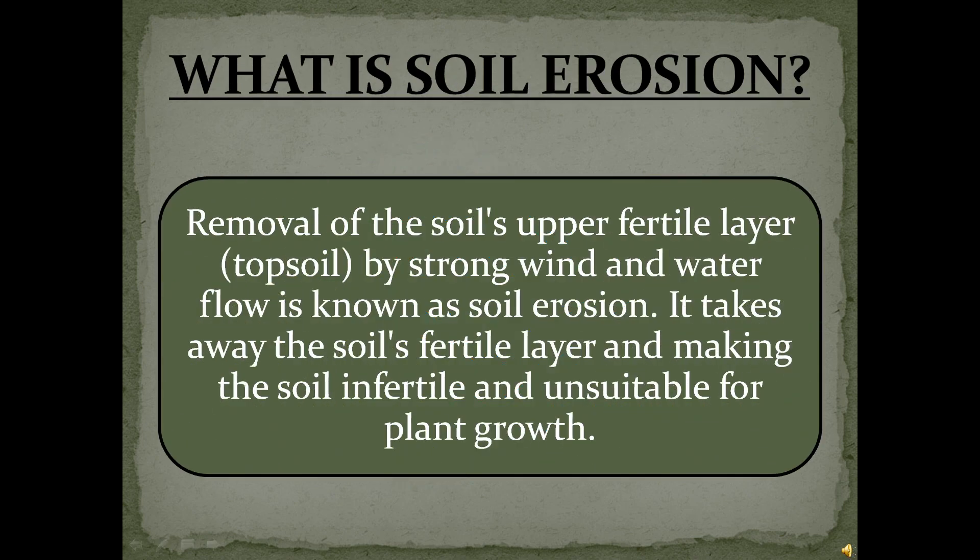Removal of the soil's upper fertile layer — topsoil — by strong wind and water flow is known as soil erosion. It takes away the soil's fertile layer, making the soil infertile and unsuitable for plant growth.